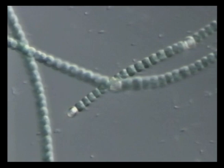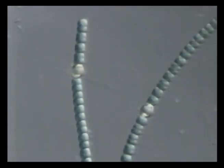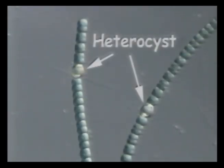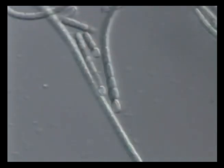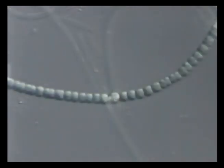Cyanobacteria have other interesting features. For example, some have modified cells called heterocysts. These heterocysts have the ability to fix nitrogen from the atmosphere to form ammonia. This fixed nitrogen is ultimately available for the growth of the cyanobacteria or for the growth of nearby plants.